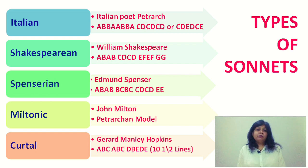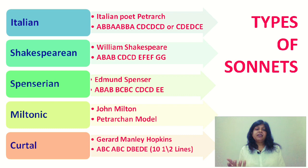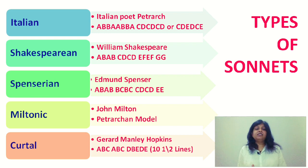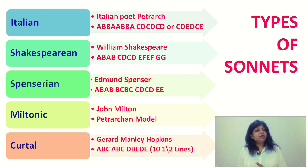Then Edmund Spenser wrote sonnets in Amoretti, a very famous work. He followed the tradition of William Shakespeare and wrote the sonnets in three quatrains and one couplet. His rhyme scheme is A, B, A, B, B, C, B, C, C, D, C, D, E, E.